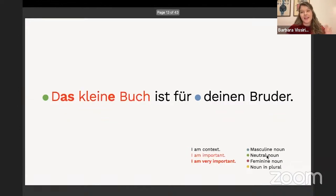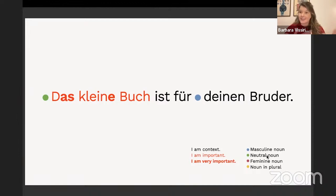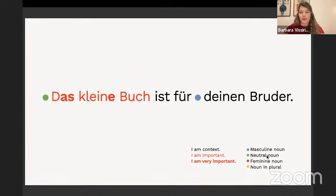Another problem is that you still need highlighting to show learners which part of the sentence to focus on. Since highlighting also relies heavily on color, combining everything can get very messy very quickly. There are hundreds of different ways this is done. So I wanted to ask: how could we use design to create something different and new?